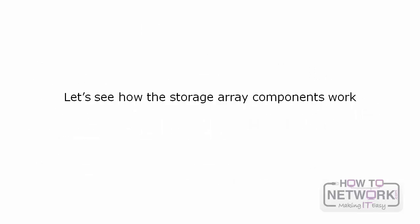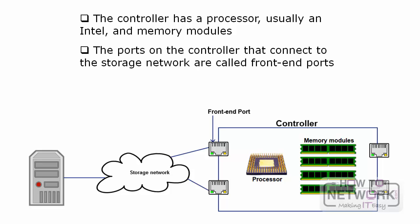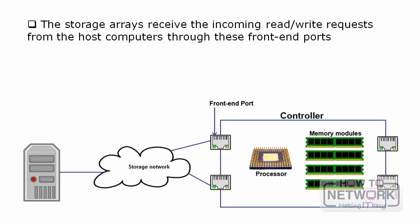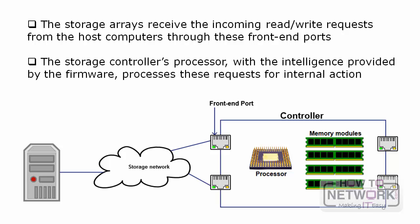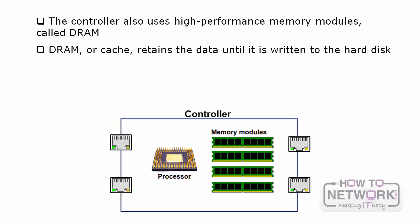In the diagram, we have a controller with a processor and memory modules. The ports on the controller that connect to the storage network are called front-end ports, and front-end ports don't necessarily mean they are on the front side of the storage array. The storage array receives incoming read-write requests from host computers through these front-end ports. The storage controller's processor, with the intelligence provided by the firmware, processes these requests. The controller also uses high-performance memory modules called DRAM, which retains data until it is written to the hard disk, and is also known as cache.